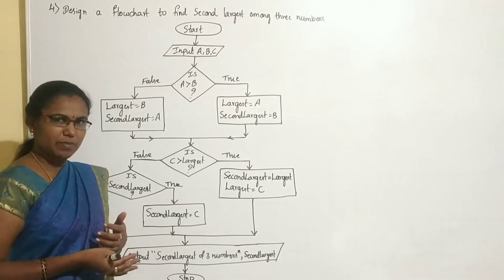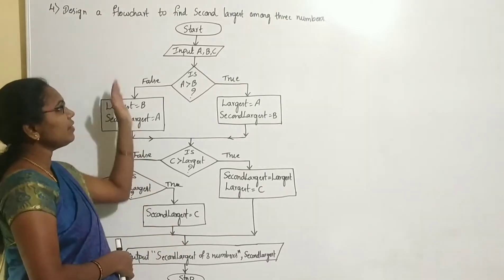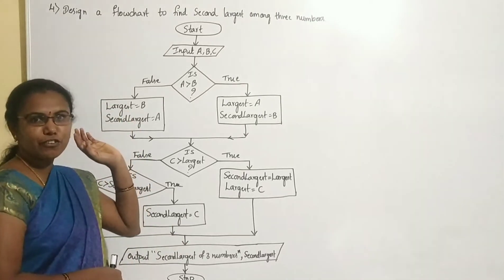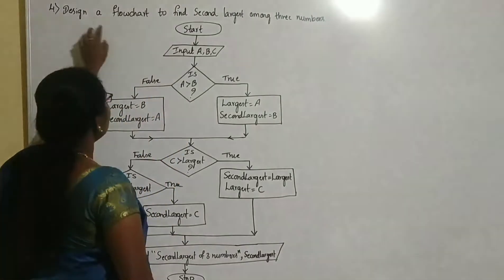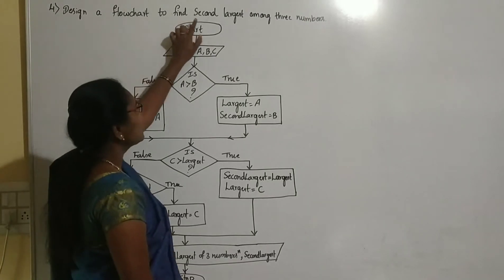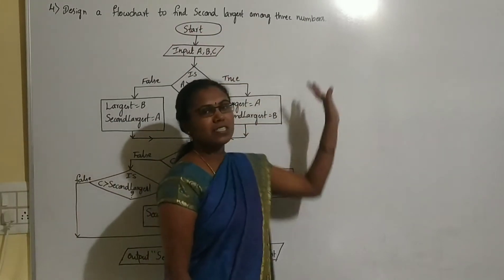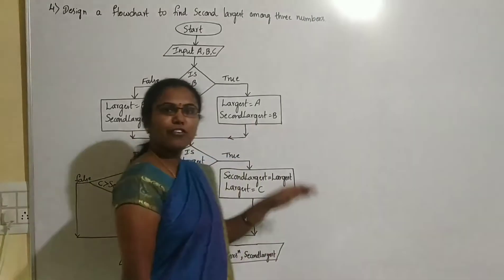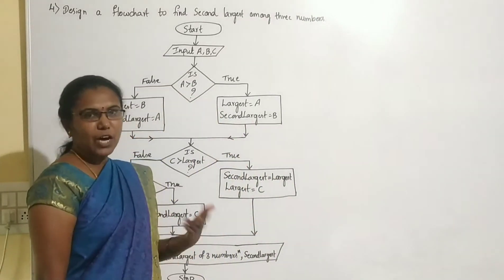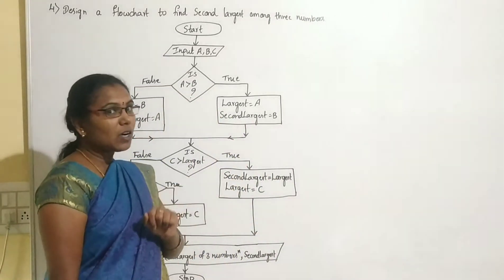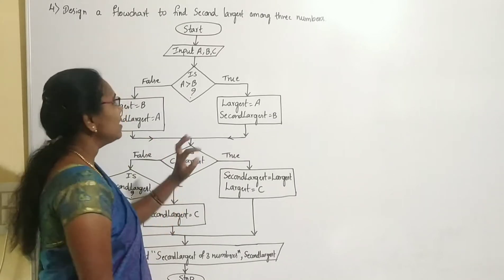We use many symbols. The fourth flowchart problem is: design a flowchart to find the second largest among three numbers. For this problem, we already developed an algorithm. Now that algorithm is converted into a flowchart.